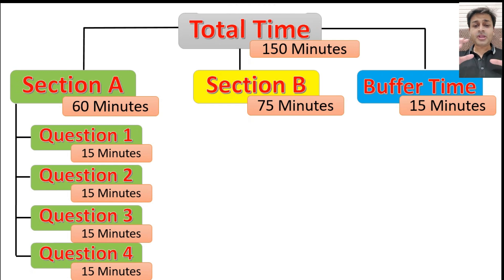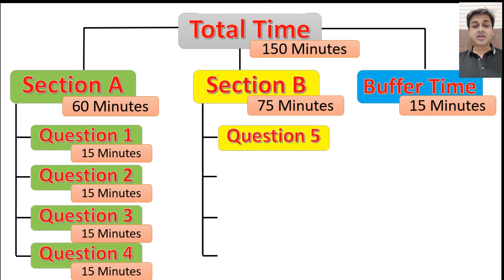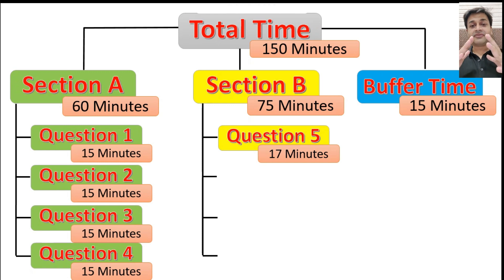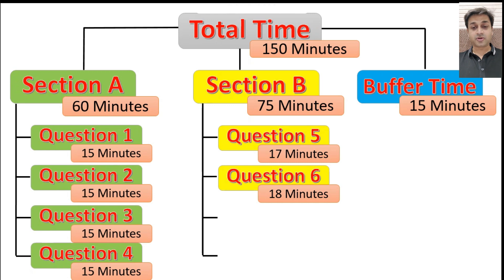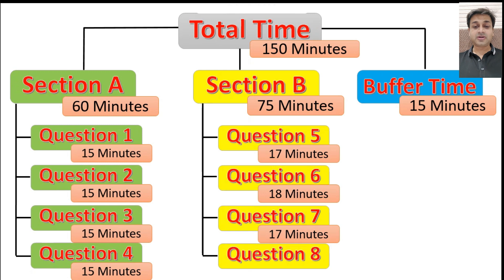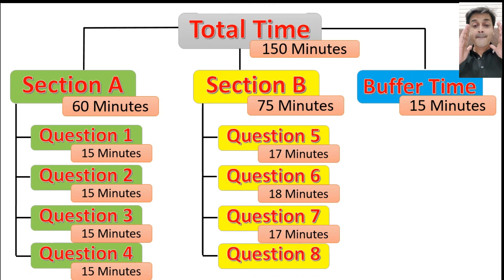For Section B, we have segregated 75 minutes, and you're going to attempt any four — say questions 5, 6, 7, and 8. When you divide 75 minutes by 4, you'll need to give each question about 17 to 18 minutes. So question 5: 17 minutes; question 6: 18 minutes; question 7: 18 minutes; question 8: 17 to 18 minutes. The C part is slightly tougher, so the first two parts you manage in 4–5 minutes and the last part might take 7–8 minutes — on average, 6 minutes per sub-question, 18 minutes to finish the entire question.